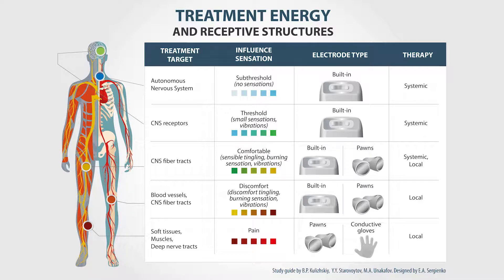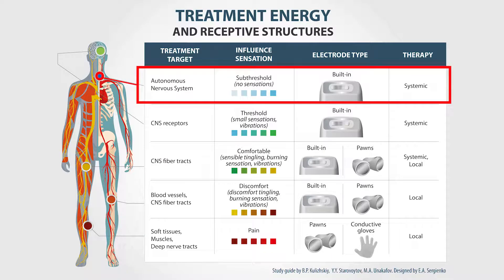Treatment energy and receptive body structures. At the sub-threshold energy level, the main target of the scanner is the autonomous nervous system. We can objectively see the body's reaction to a basically non-sensible influence. It is used in systemic therapy, including digital techniques and treatment of children. At this level, we usually use the built-in electrode of the device.